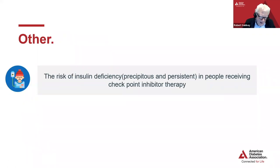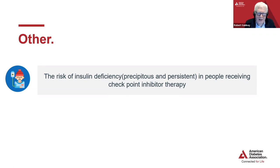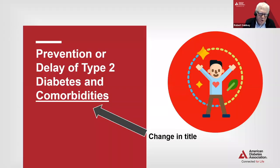We also highlighted an important aspect that there is a risk of insulin deficiency that can be precipitous and persistent in individuals treated with checkpoint inhibitor therapy — therapy used for the treatment of some cancers. So that covers diagnosis. Now we're going to move to prevention or delay of type 2 diabetes, where we cover comorbidities as well.